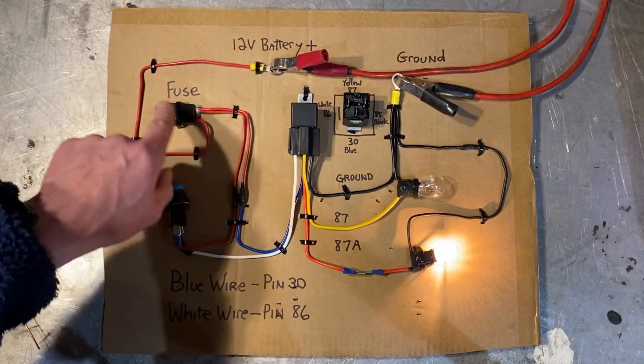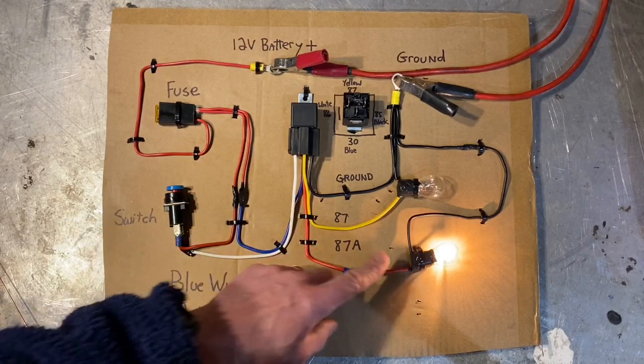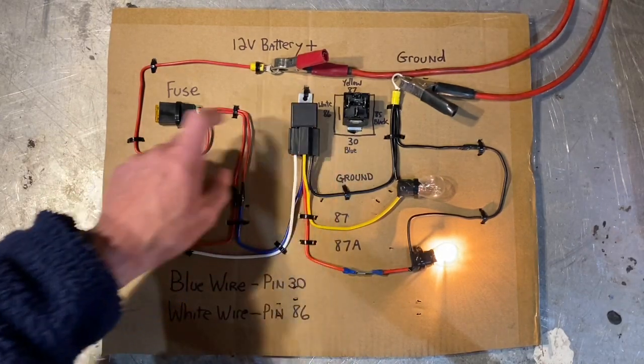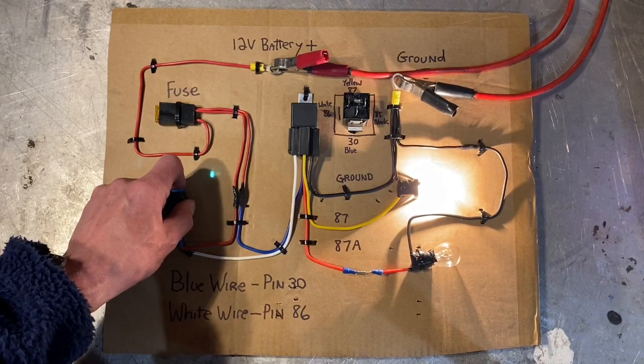Basically, the power comes in through the fuse, and then it goes in pin 30 and out pin 87A at all times. But when the relay clicks over, it takes away power from 87A and sends it to 87 instead.